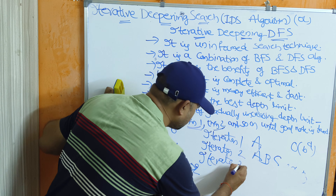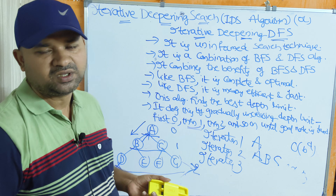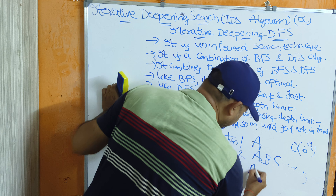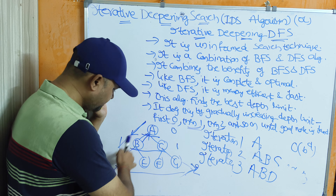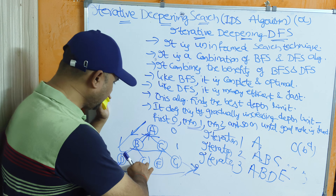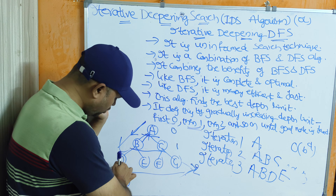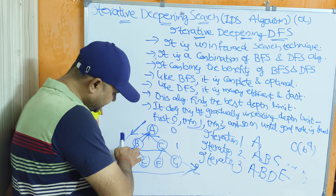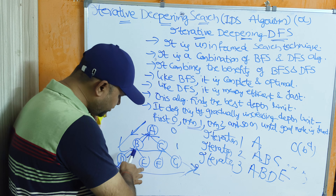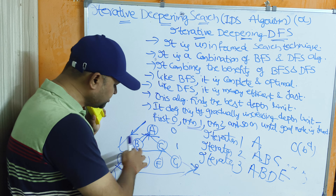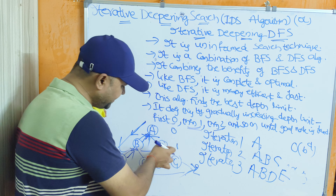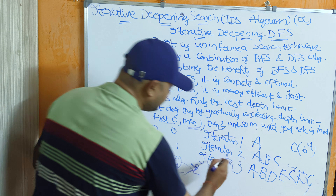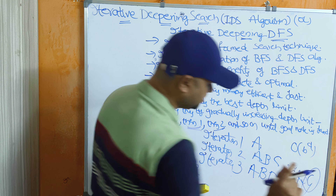Now depth is increased to two. DFS traversal proceeds: A, B, D — backtrack, then E — backtrack, no more children of B, so backtrack to A. The unexplored child of A is C, then F — backtrack to G. G is the goal node, so we stop the process. The goal node is found at depth two.